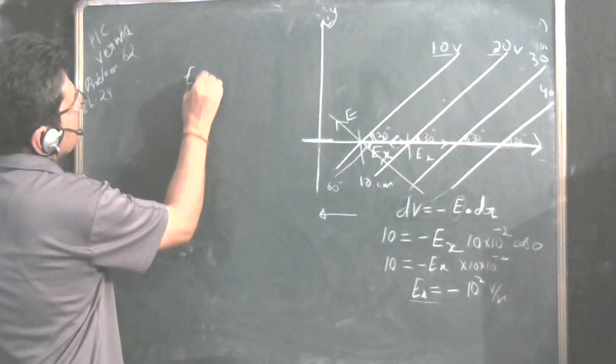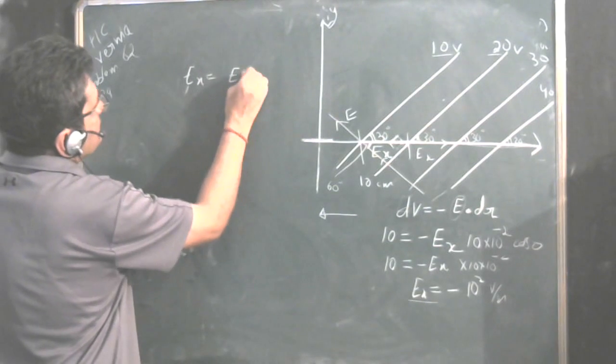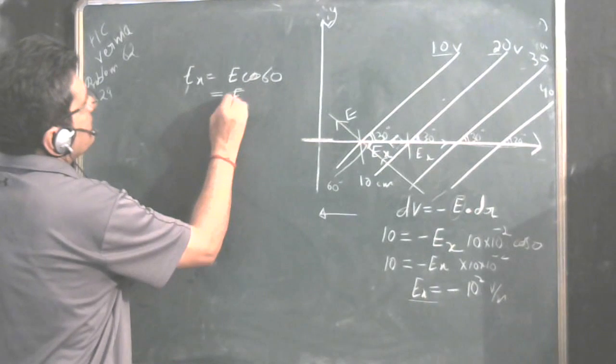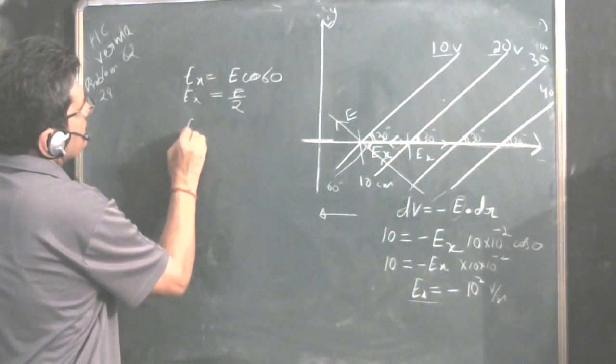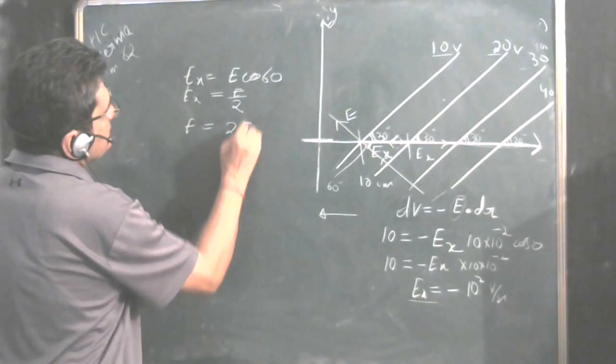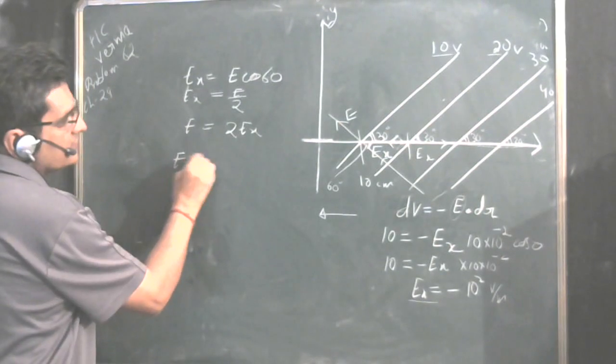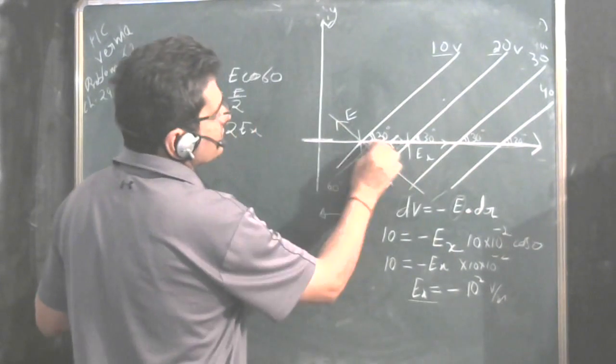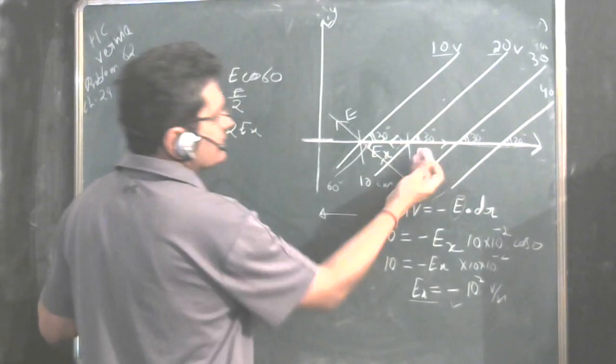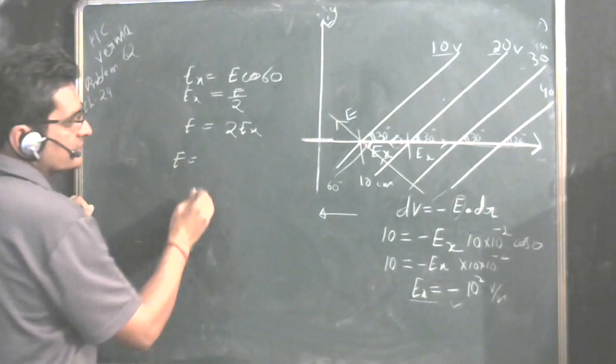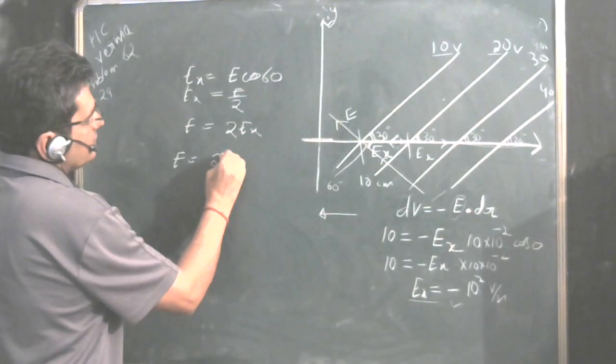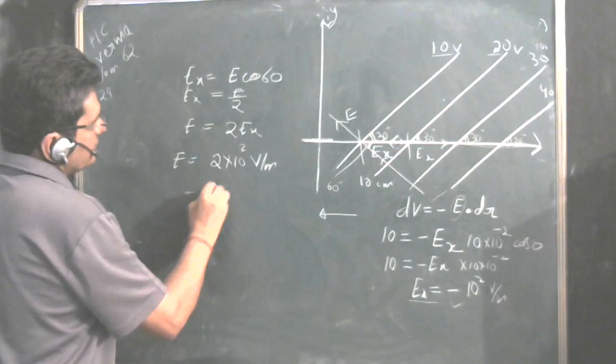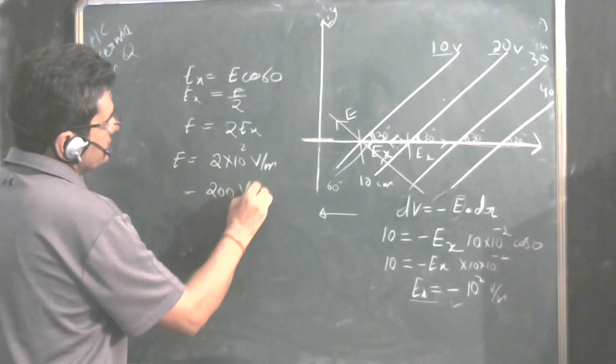E times cos 60 equals Ex. Since we have already reversed the direction due to the negative sign, E would be equal to Ex divided by cos 60, which is 10 to the power 2 divided by 0.5, giving 200 volt per meter.